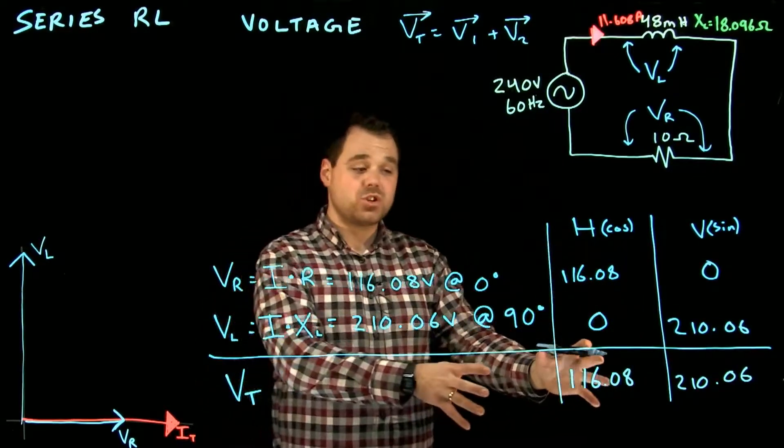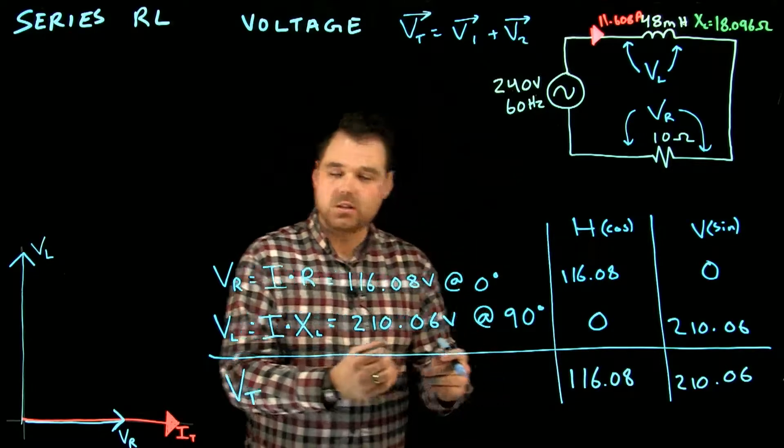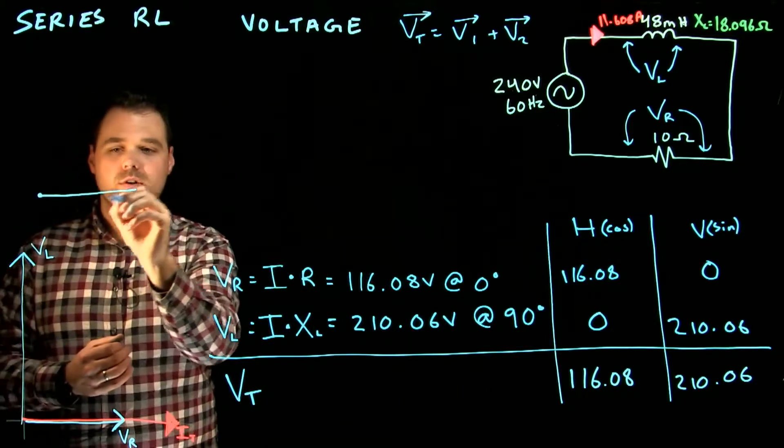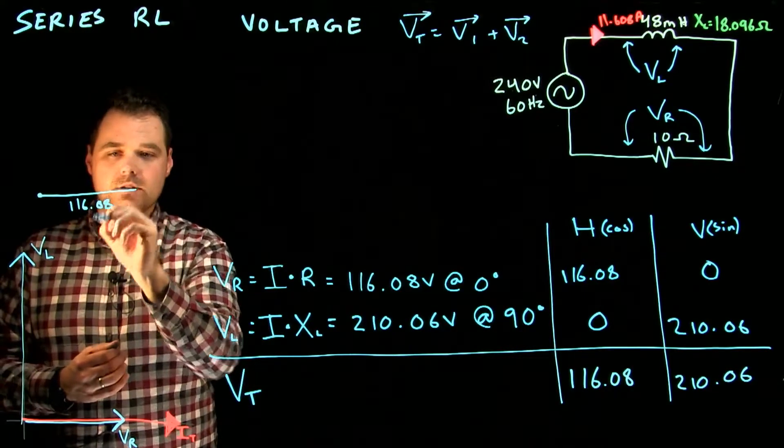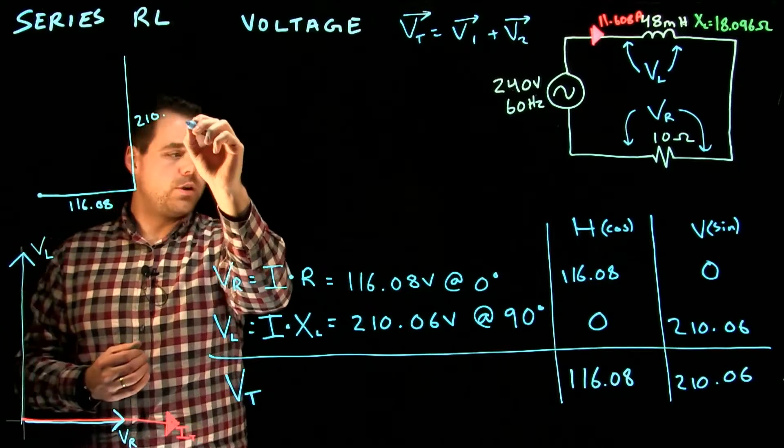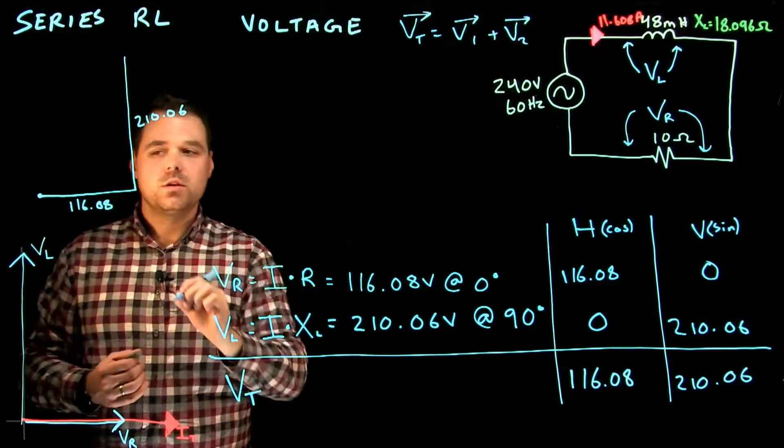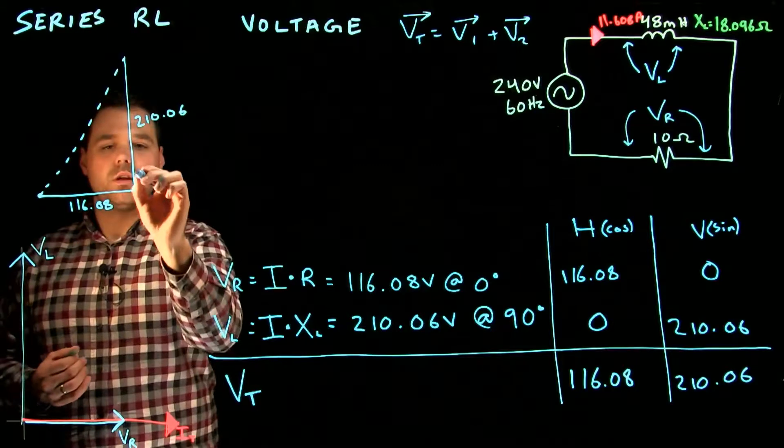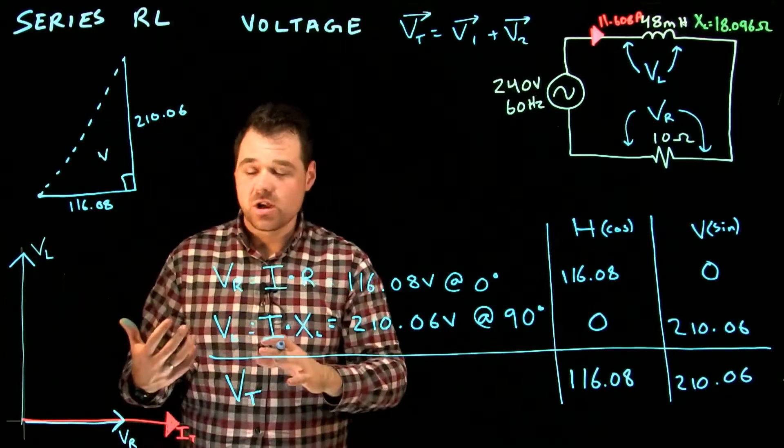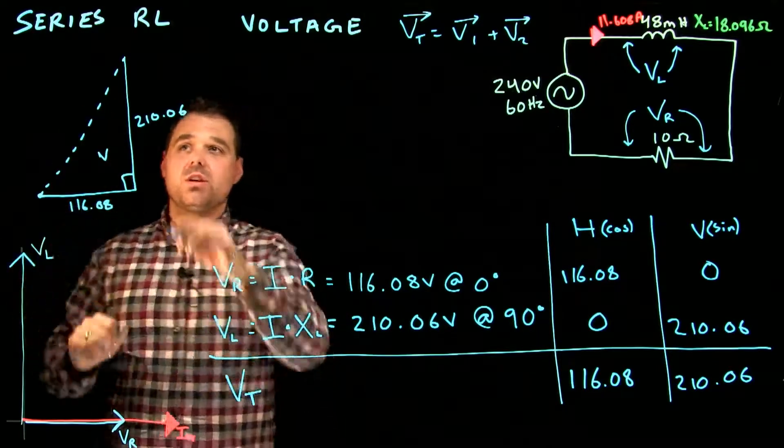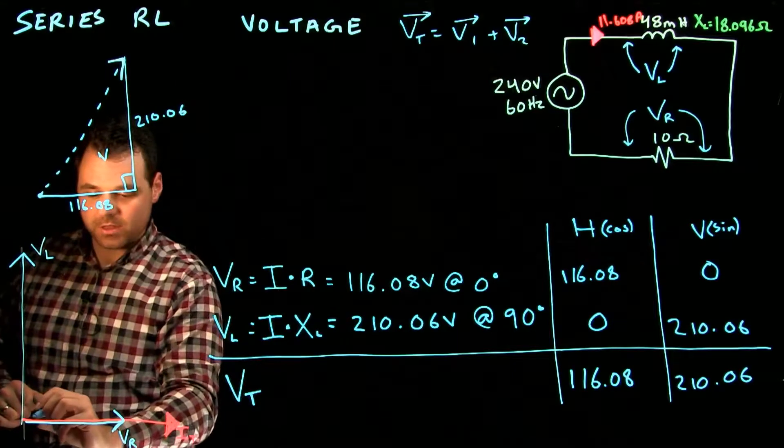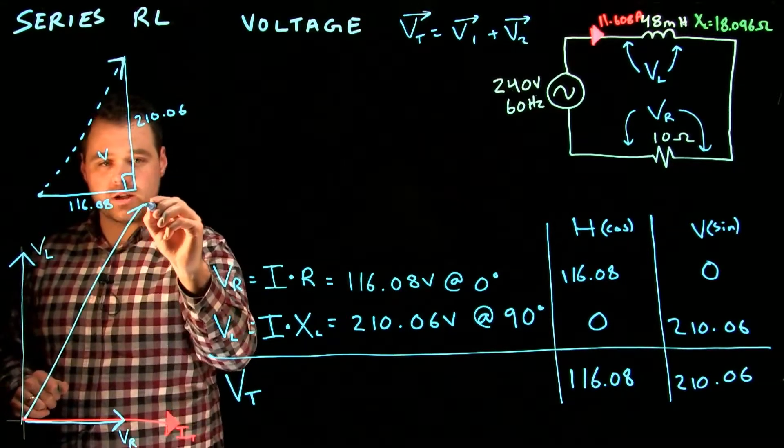What these have essentially done, whether you realize it or not, is have I started at a point, gone over 116.08 and gone vertical 210.06. Have I made a right angle triangle? In this case, a voltage triangle, absolutely I have. And this is going to match up perfectly with our phasor diagram, and we're going to get that phasor onto our phasor diagram, VT.